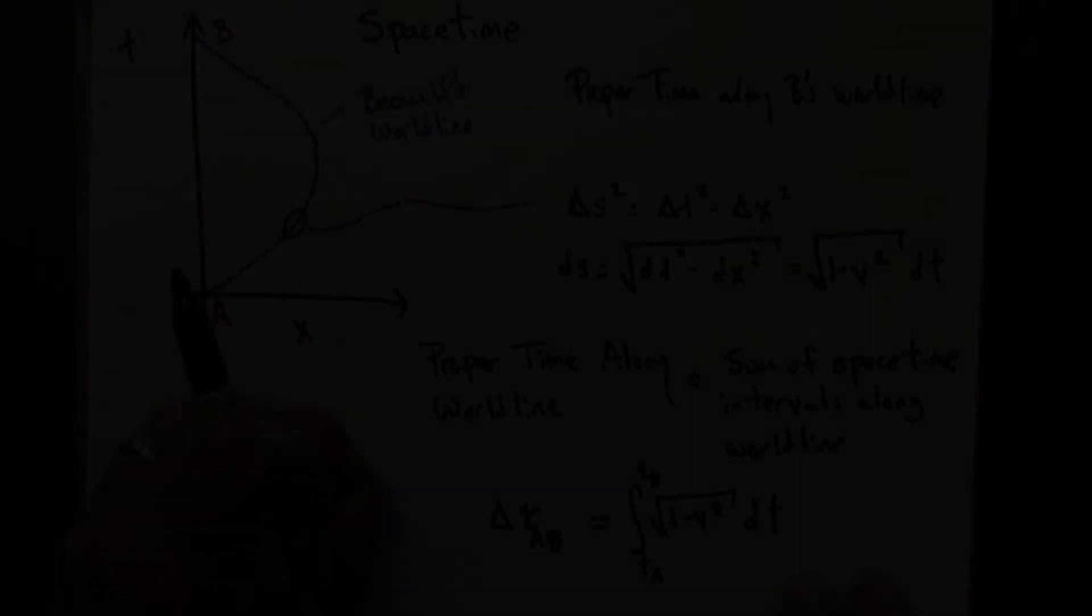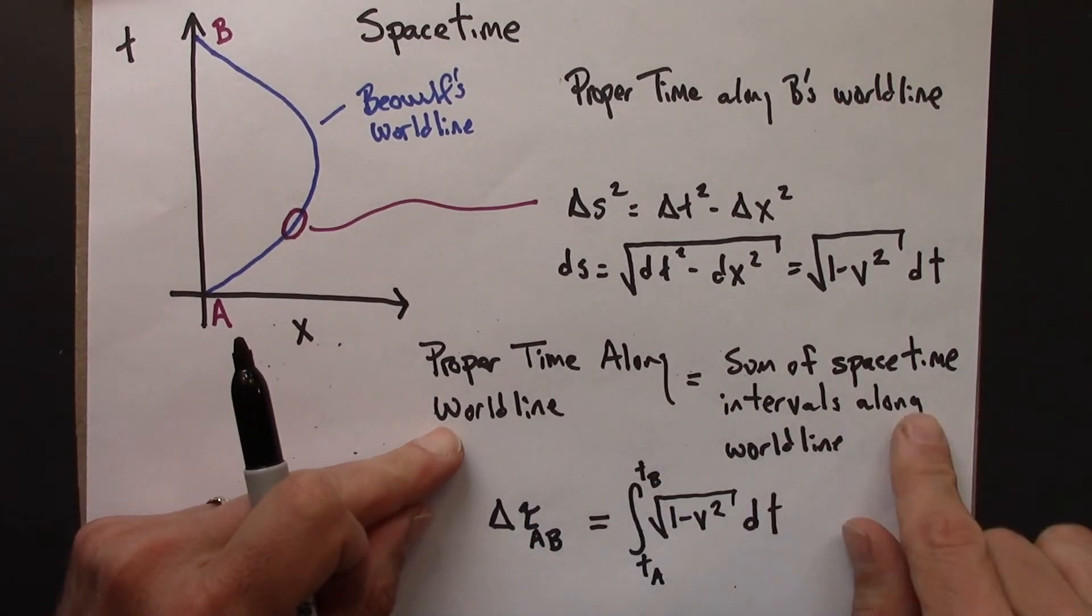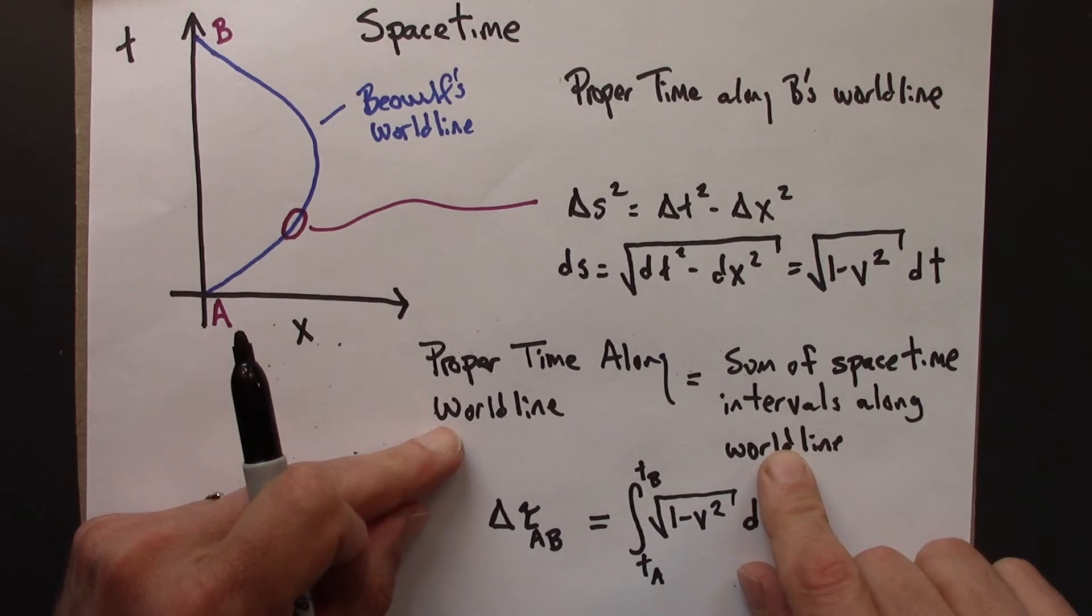The total proper time along this curved world line in space is going to be just the sum of the spacetime intervals along all these straight little line segments. So let me write that out.